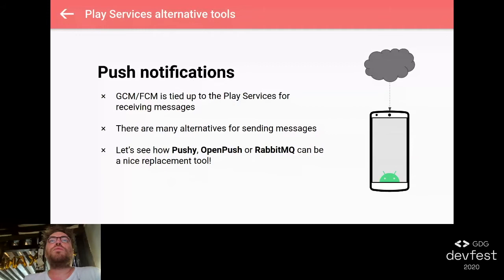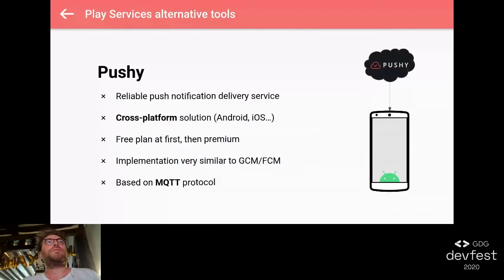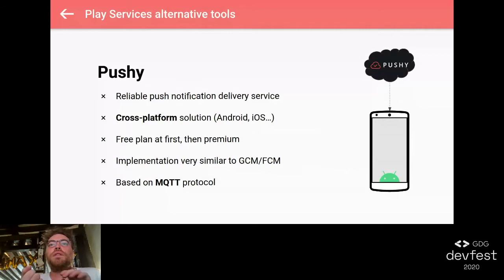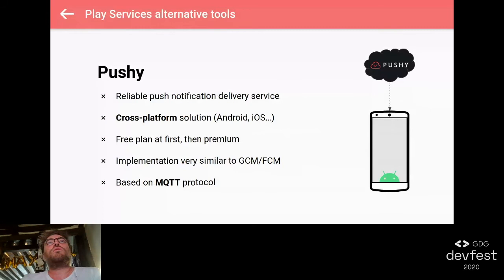Pushy is a reliable push notifications delivery service. It's nice because it's cross-platform, so you can implement it on your backend and use the SDK for Android, iOS, Xamarin, Flutter, or something similar. You'll have push notifications for all these platforms. At first it's a free plan, so you can test it and see if it's suitable for your use case, and then go for the premium plan. It's a paid plan at the end. The implementation is very similar to GCM/FCM: you need to register, send a token to your backend and to the Pushy server, then process messages. The protocol is based on MQTT.